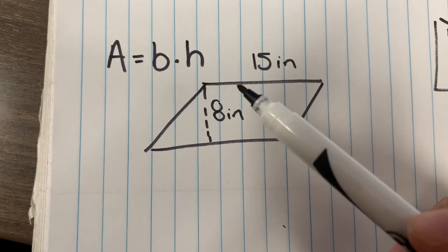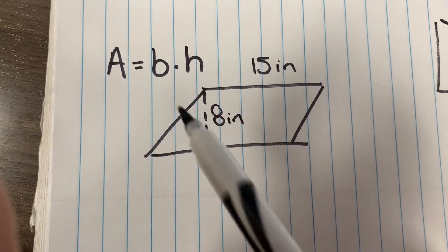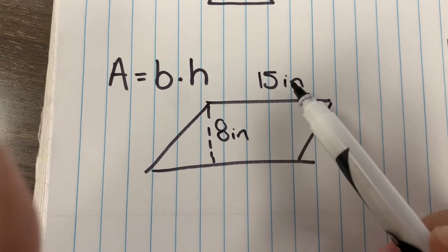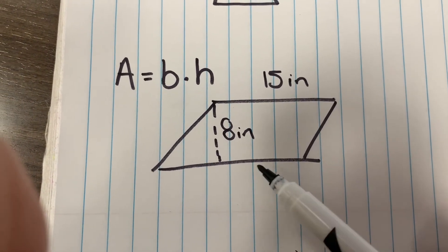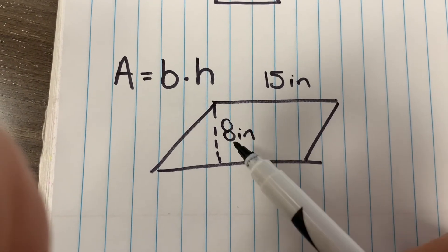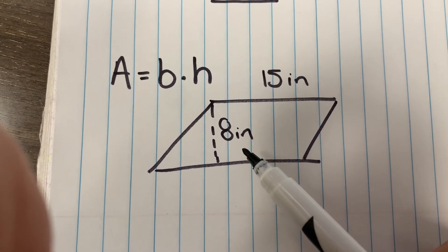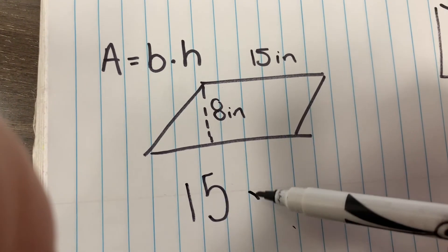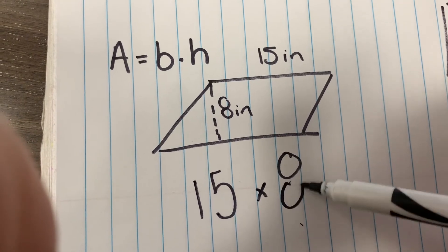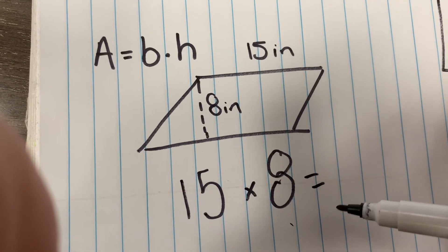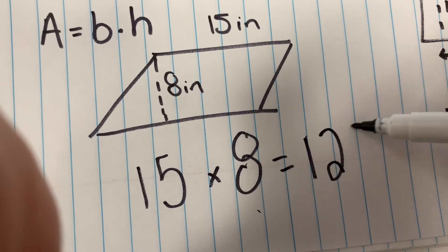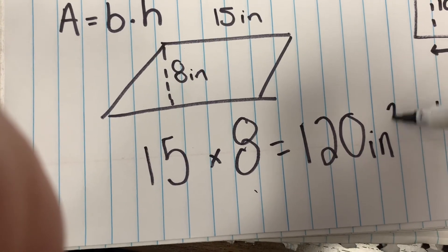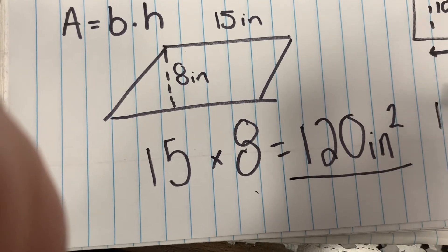For a parallelogram, the area here is easy again. It's just base times height. We have the base, which would be the same as here too, 15 inches. And then the height here is shown as 8 inches. We're just going to do base 15 times 8, which is going to give you on your calculator 120. Again, don't forget inches squared. That's how you get that.